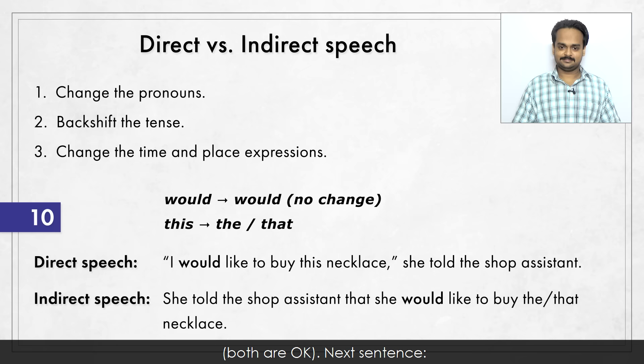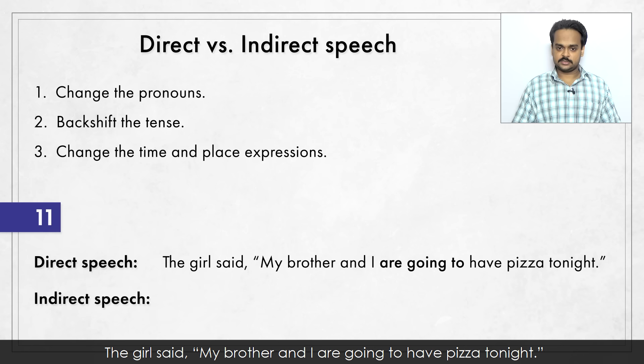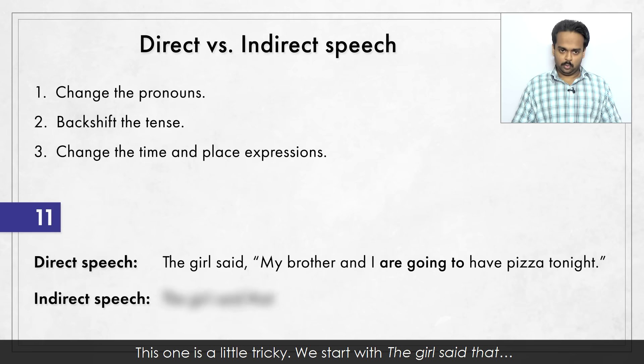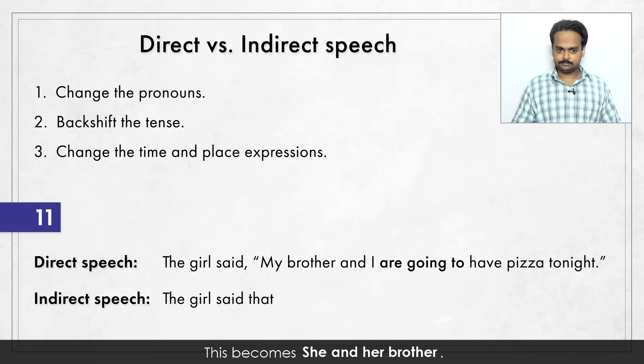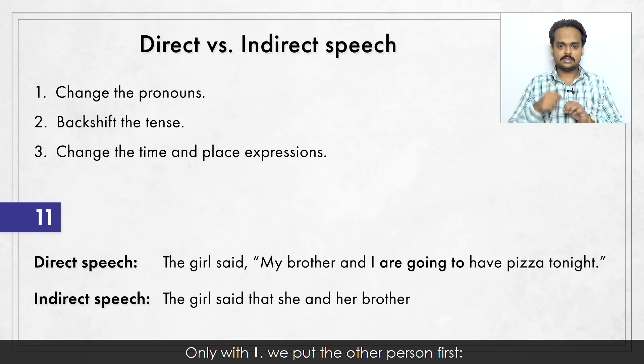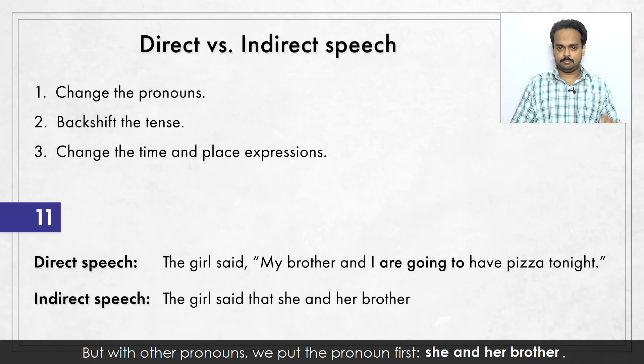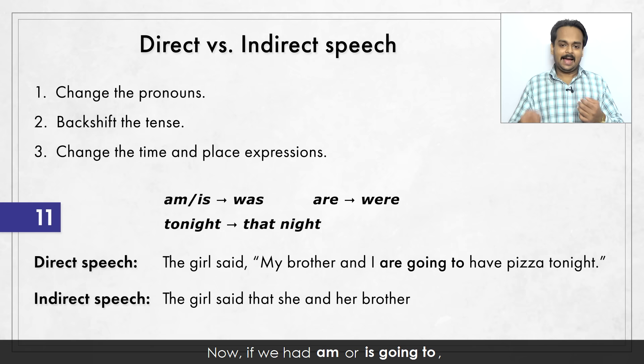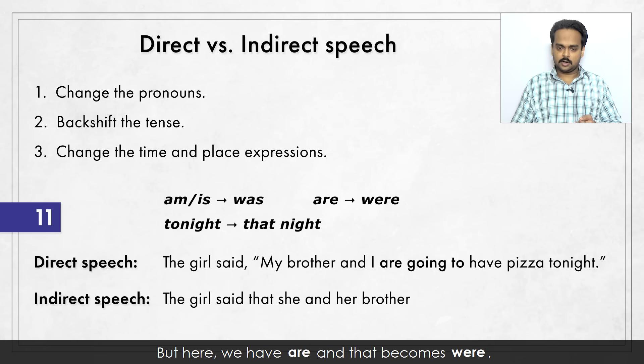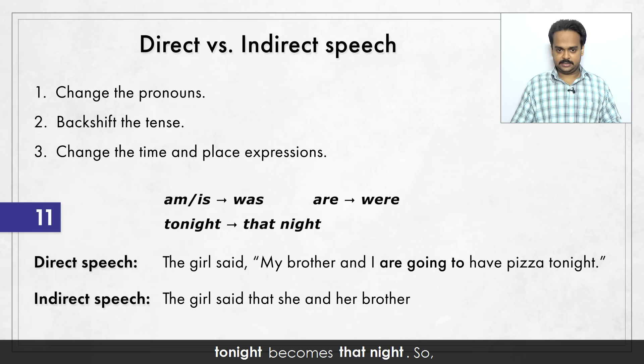Next sentence: The girl said, "My brother and I are going to have pizza tonight." This one is a little tricky. We start with "the girl said that" and then "my brother and I" becomes "she and her brother". Only with "I", we put the other person first – "my brother and I", "my friend and I", "John and I", etc. But with other pronouns, we put the pronoun first – "she and her brother". "Are going to" becomes "were going to". "Tonight" becomes "that night". So: the girl said that she and her brother were going to have pizza that night.